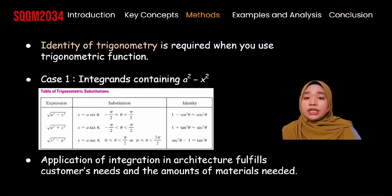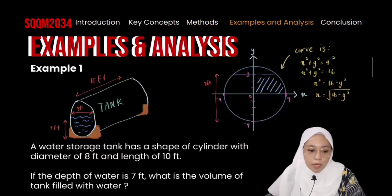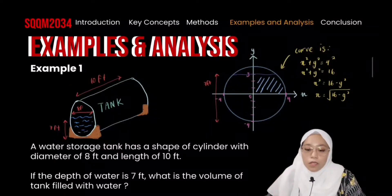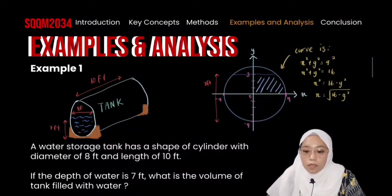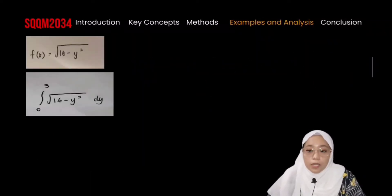The application of integration in architecture fulfills customer needs and determines the right amount of material needed. For Example 1, the problem is: a water storage tank has the shape of a cylinder with a diameter of 8 feet and a length of 10 feet. If the depth of water is 7 feet, what is the volume of water in the tank? We cut the 2D cross-section, where the depth of water is 7 feet. On the y-axis, we plot from −4 to 3, and since the diameter is 8 feet, we plot from −4 to 4. From the shaded area curve, we find that x = √(16 − y²). To find the volume, we need to integrate the shaded part from −4 to 3: ∫√(16 − y²) dy. We can use the expression √(a² − x²) and substitute y = a sin θ.